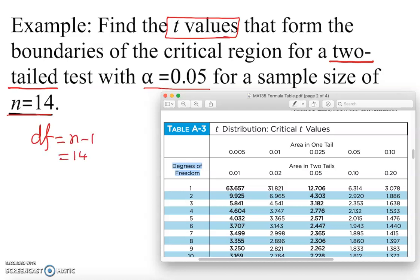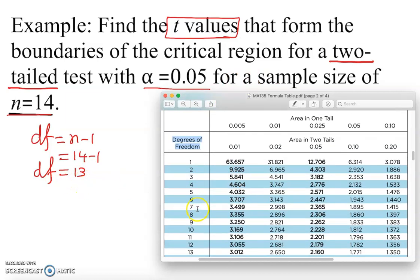This degree of freedom describes the number of scores in a sample that are independent and free to vary. So we have 13 degrees of freedom free to vary. We go down to 13 - remember, we are not going to 14, we're going to go to 13.